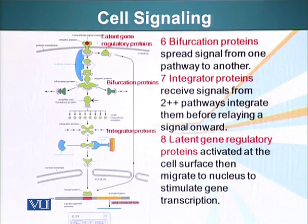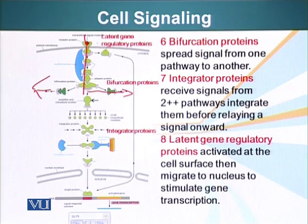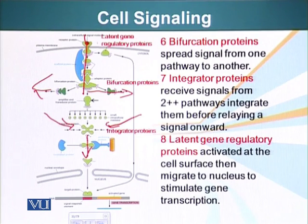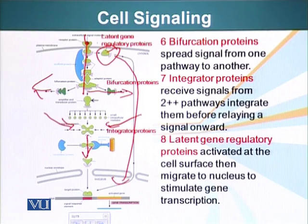Bifurcation proteins spread a signal from one pathway to another — they receive the signal and send it sideways to other metabolic or signaling pathways. Integrator proteins do the reverse: they receive signals from different pathways or different signaling molecules and integrate them before relaying the signal onward. Latent gene regulatory proteins are activated at the cell surface when the receptor becomes activated, then migrate to the nucleus where they stimulate production of specific messenger RNAs by recruiting transcription factors at specific locations on the DNA.